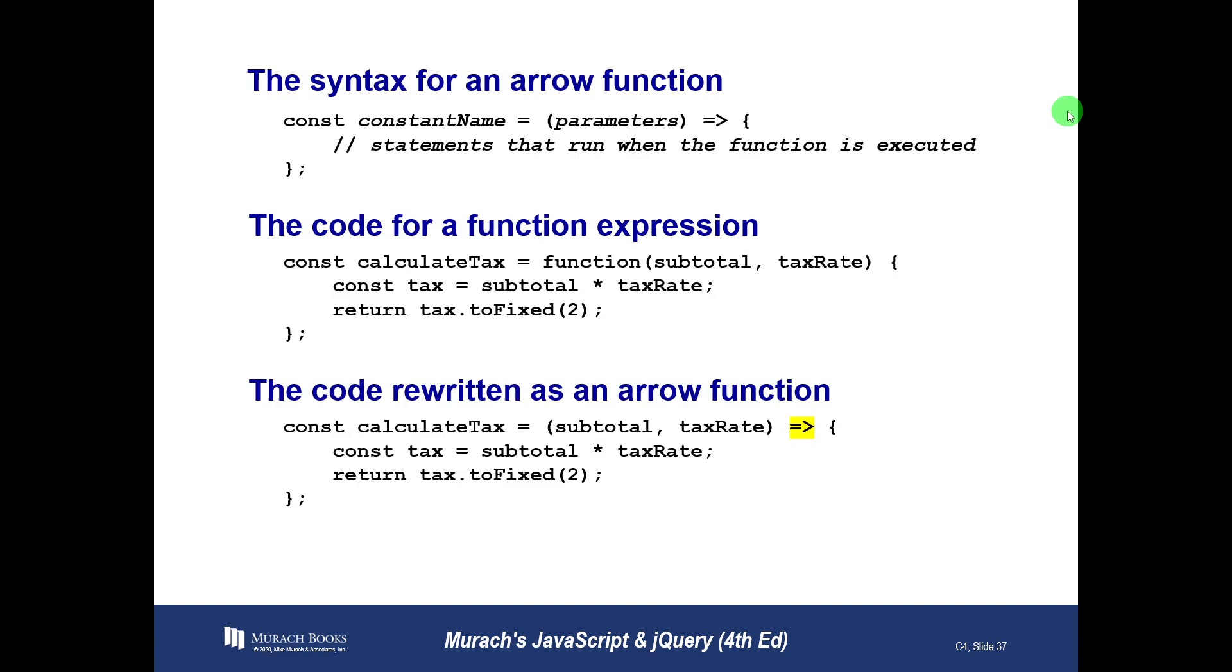Let's take a look at the syntax for an arrow function. It starts out the same way a function expression did, by declaring a constant with the name. We have the assignment operator just like before, but now we don't have the function keyword. Instead, we just have parentheses with a list of parameters inside. After the parameters, then we have the arrow. The arrow is an equal sign followed by a greater than sign, and it looks like an arrow, and it points to the function that these parameters are going to go into.